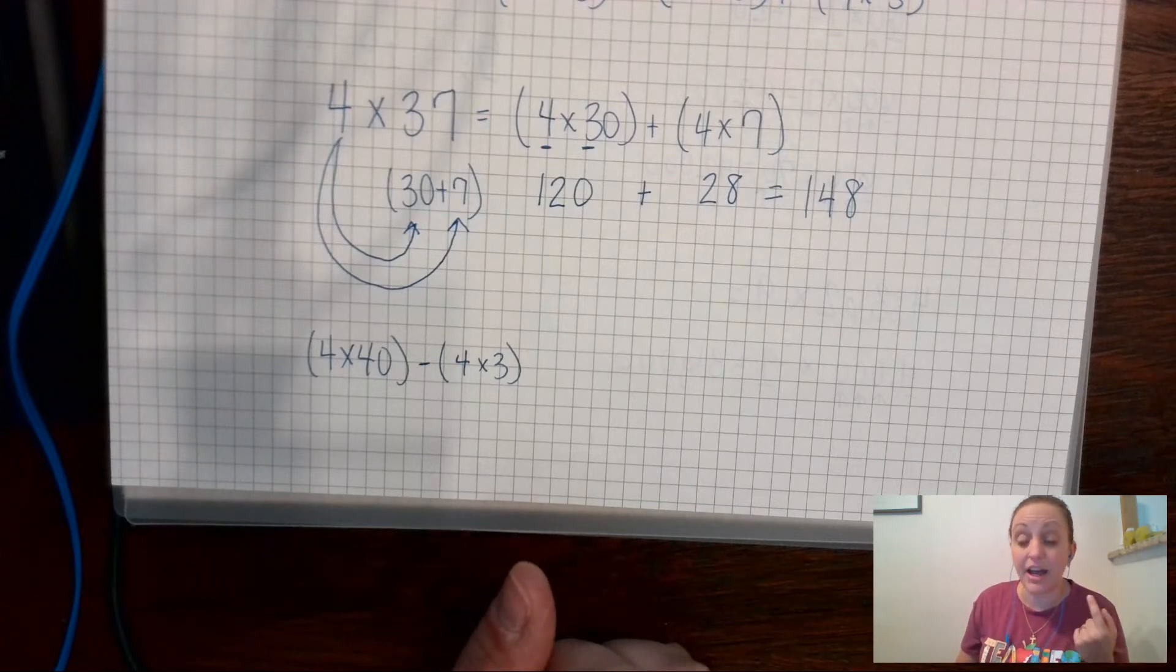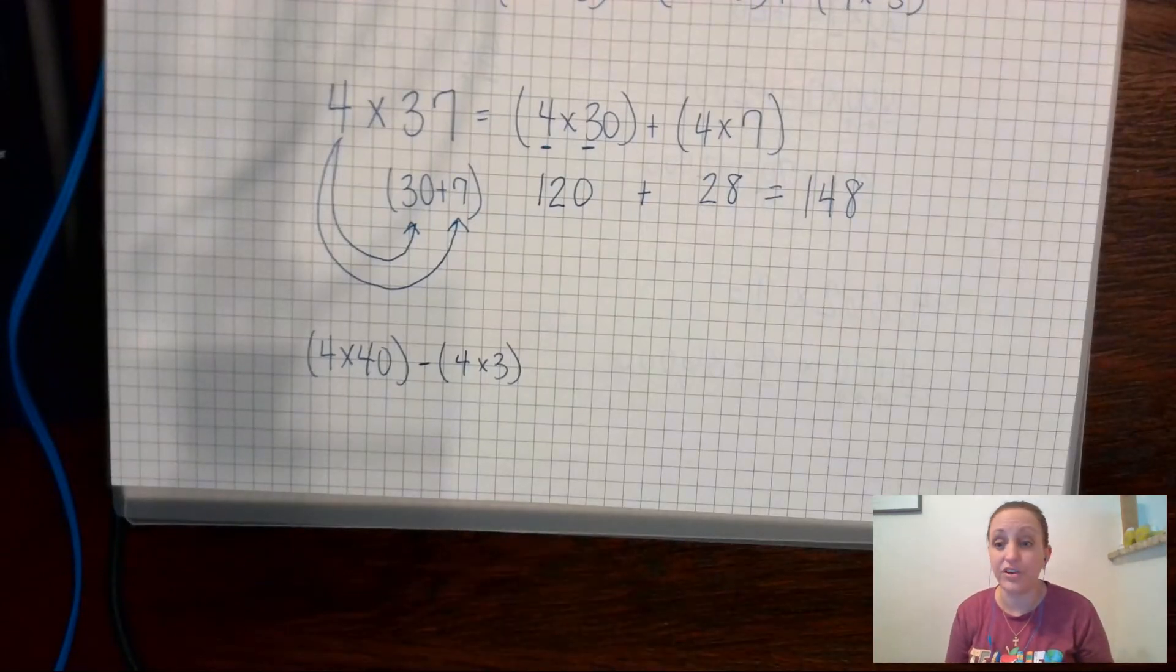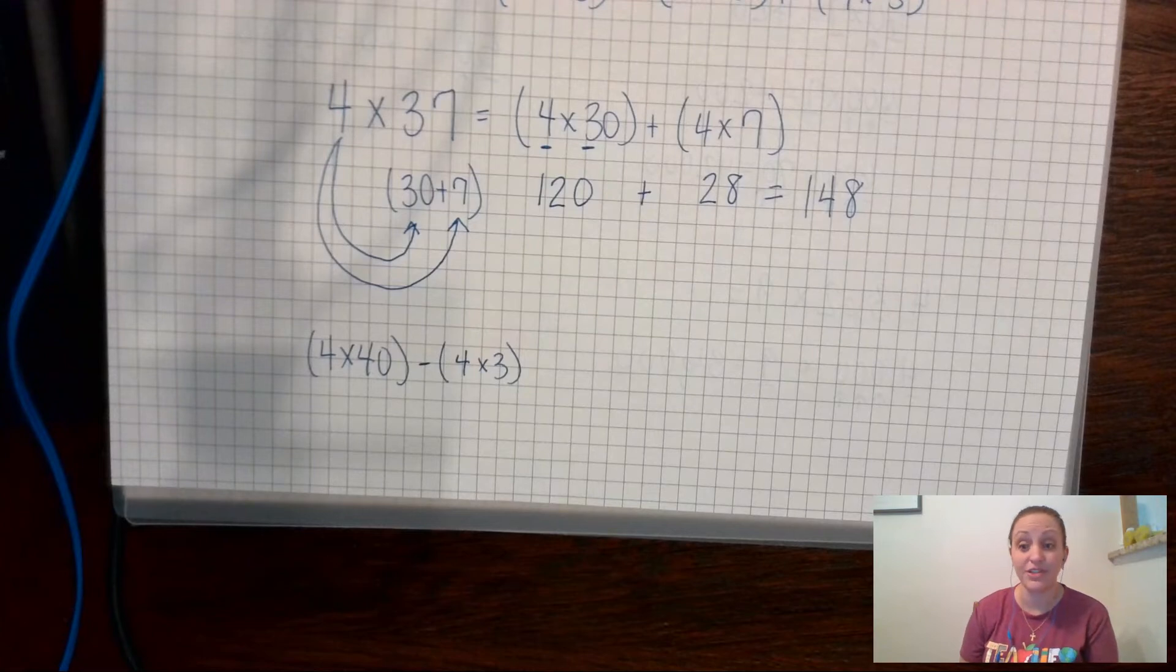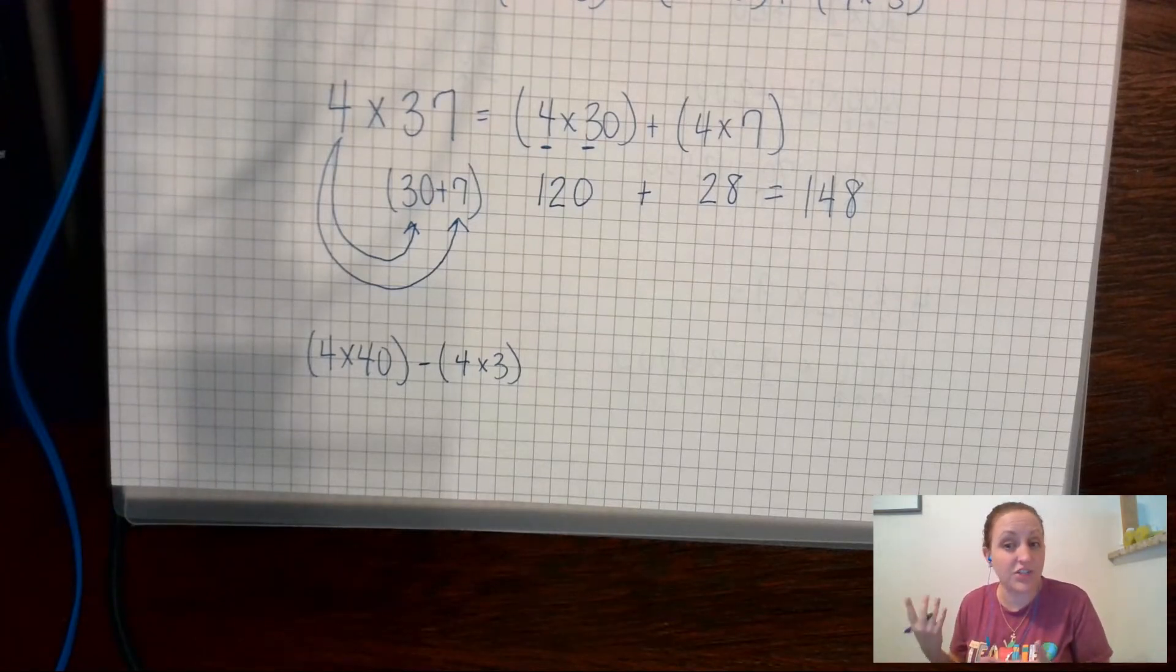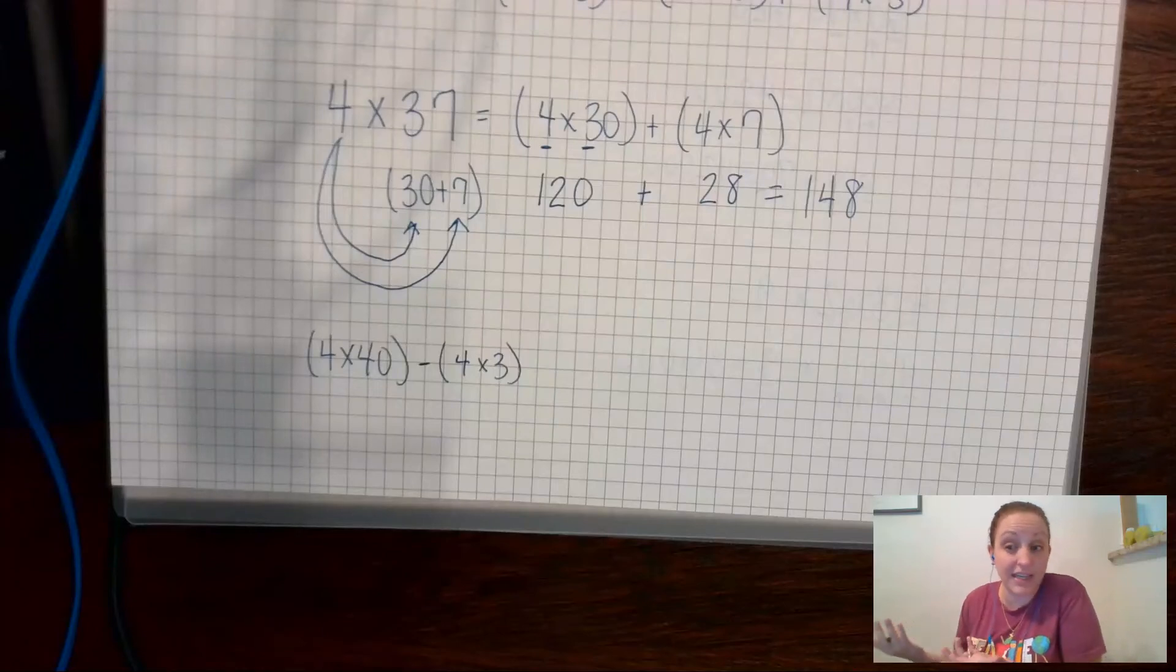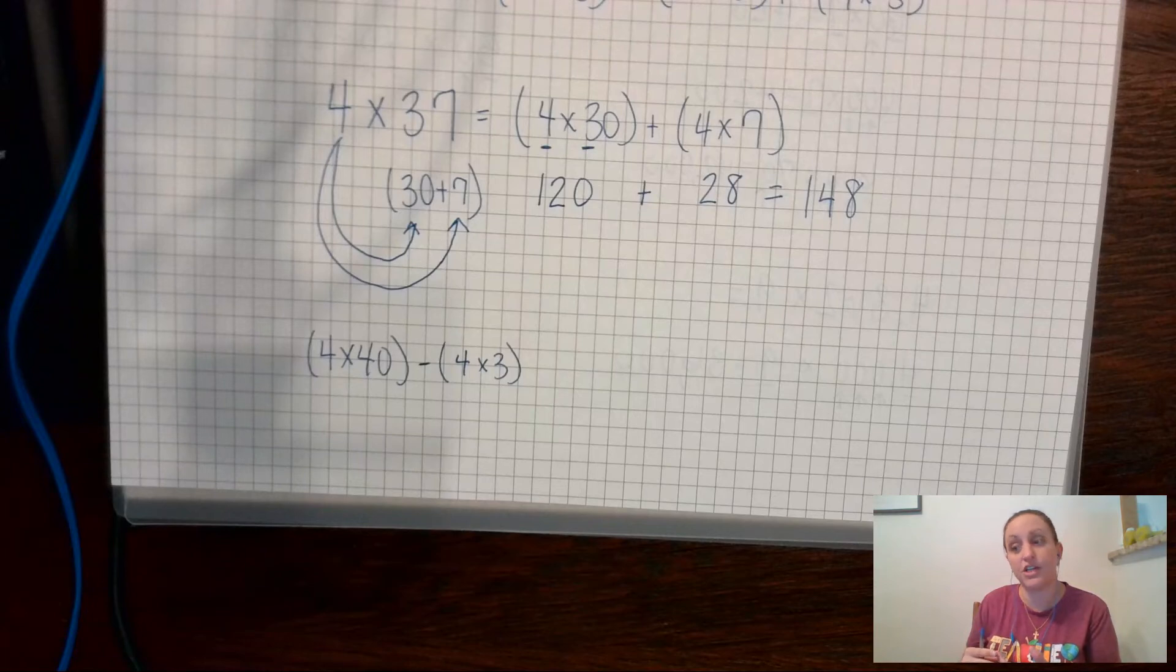So if it tells you use the distributive property to solve and you're like, I really don't get the distributive property, or use the computation to solve and you don't get computation, that's okay, as long as you understand how to find the right answer, that's what I'm looking for. But I need you to tell me how you got there. So as you're looking at, I know you will see a test question, you might see a quiz question where it says to use a specific strategy. I don't want you to stress out if you don't understand that strategy, I want you to use the strategy that you do understand and explain what you did.